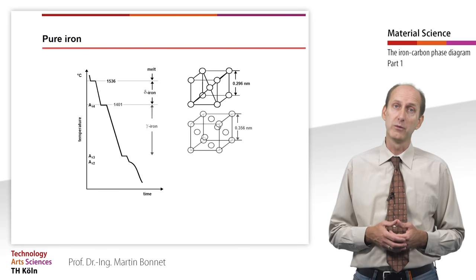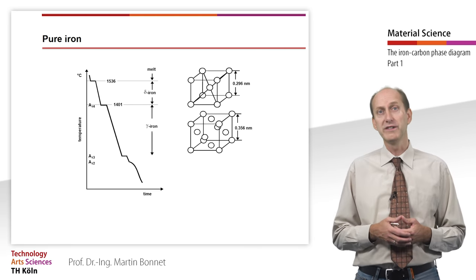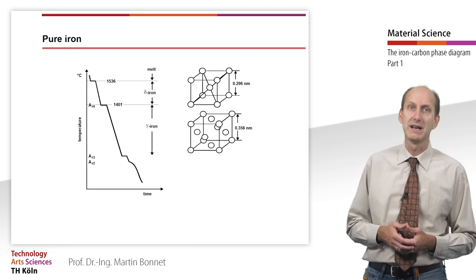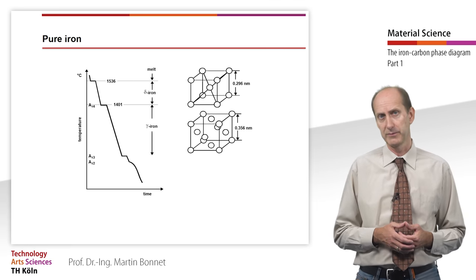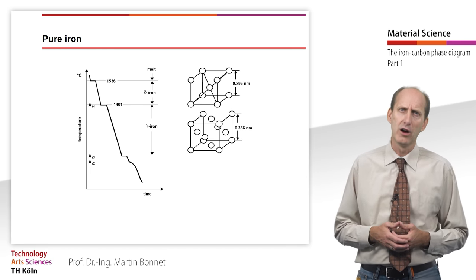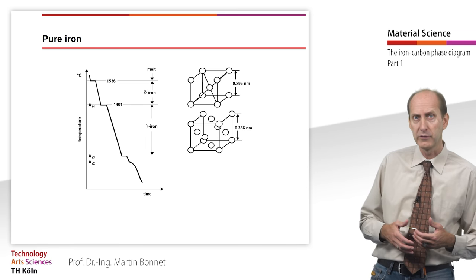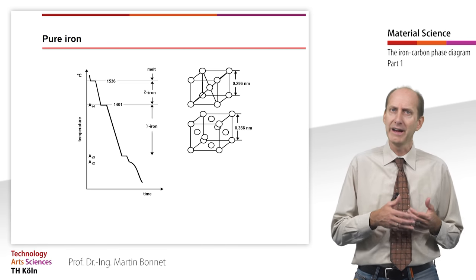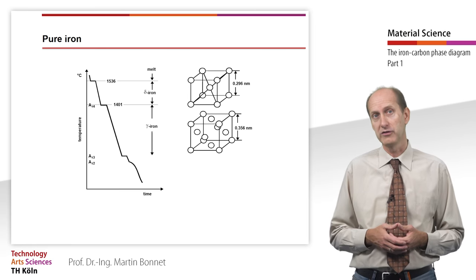At 1401 degrees Celsius, the more densely packed face-centered cubic lattice, the gamma iron appears. Here the second arrest point occurs. Although it is not the solidification that takes place, but an exothermic solid-solid transition.